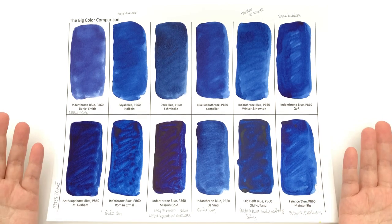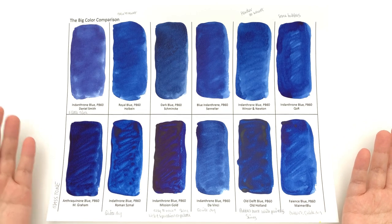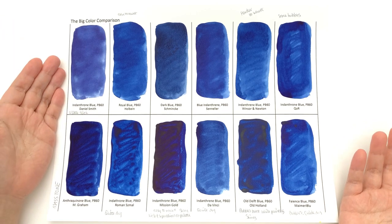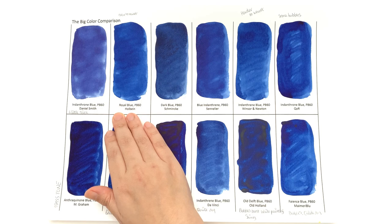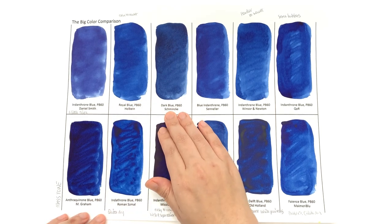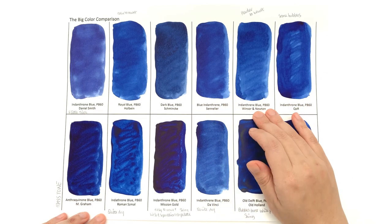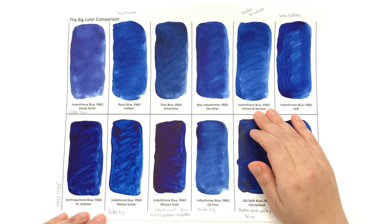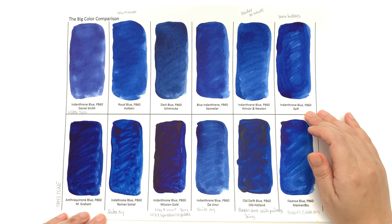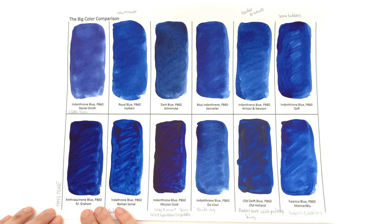So we have a wide variety of names here. From Daniel Smith we have Indanthrone Blue, then Royal Blue by Holbein, Dark Blue by Schmincke, Blue Indanthrone by Sennelier, Indanthrone Blue by Windsor Newton, Indanthrone Blue by QoR, Anthroquinone Blue by M. Graham.